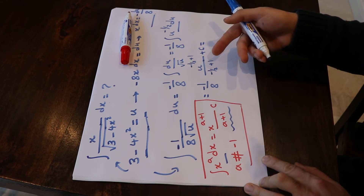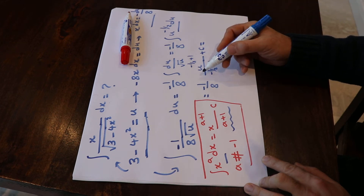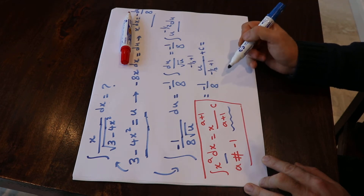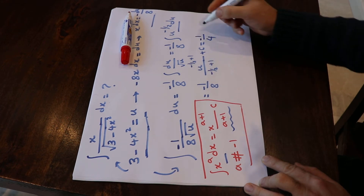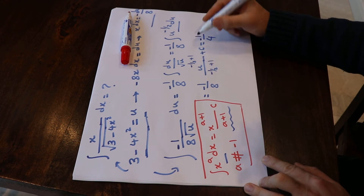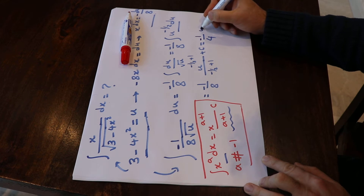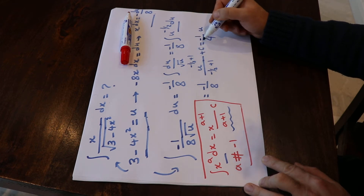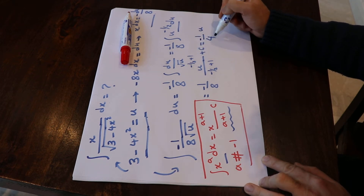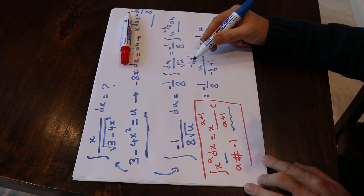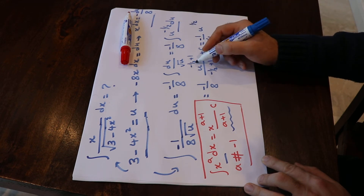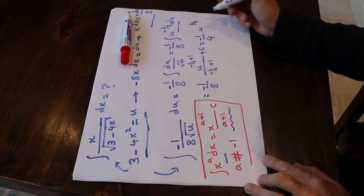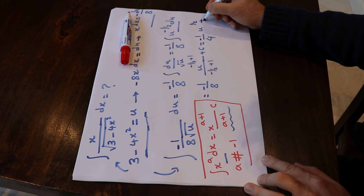Calculating the result: 1 divided by (1/2) gives 2, so 2 times minus 1/8 equals minus 1/4, giving minus 1/4 times u to the power of 1/2, plus C.